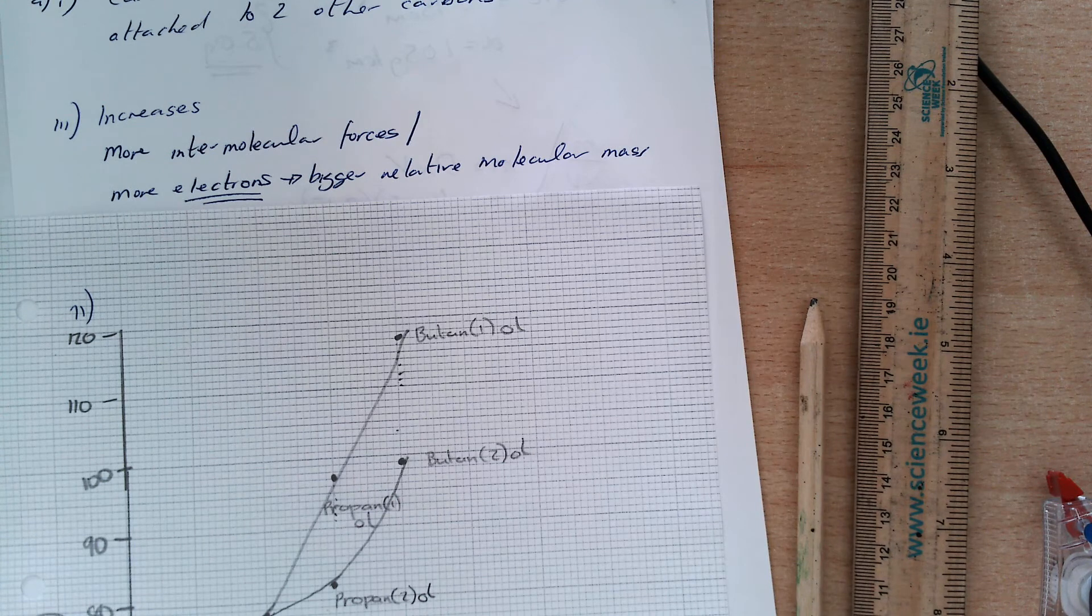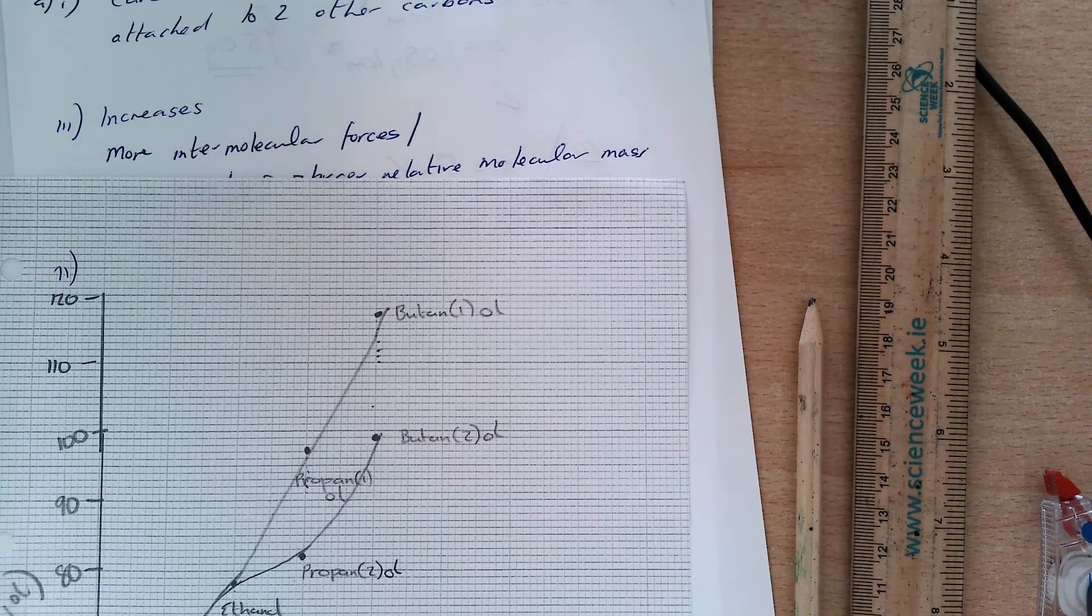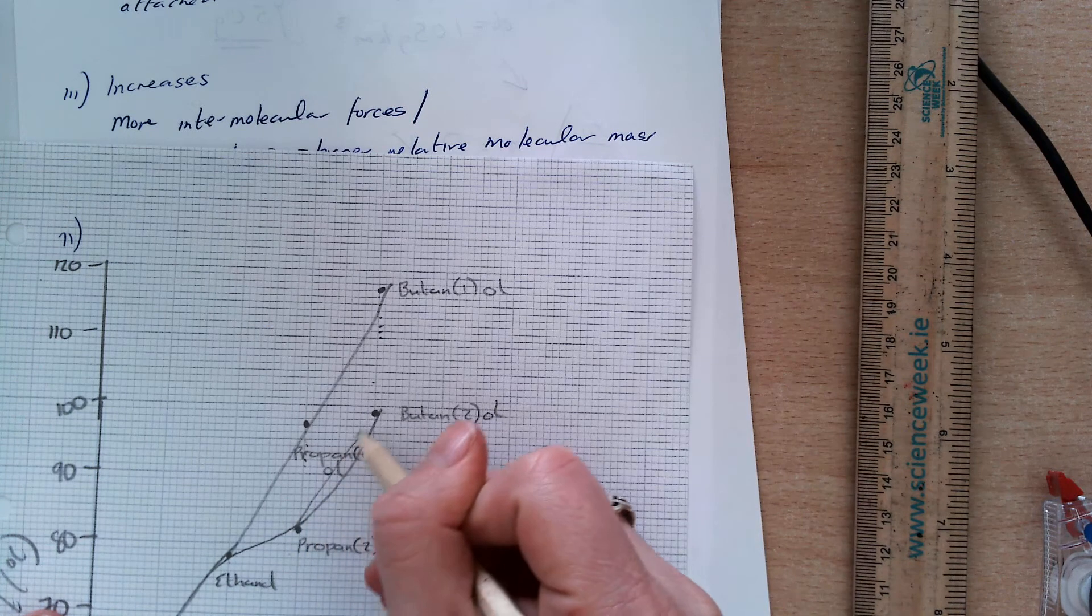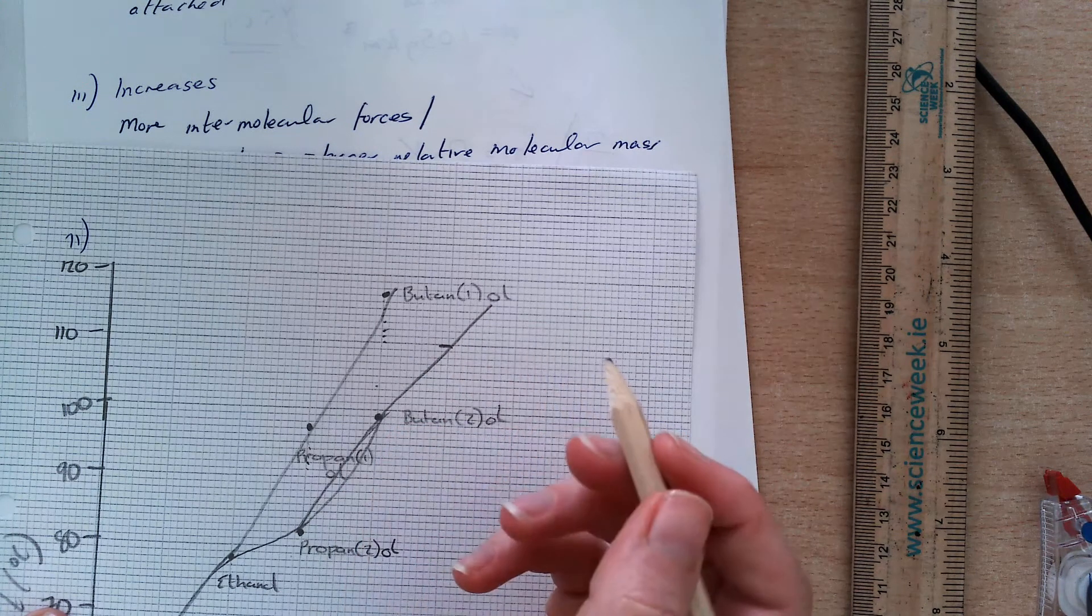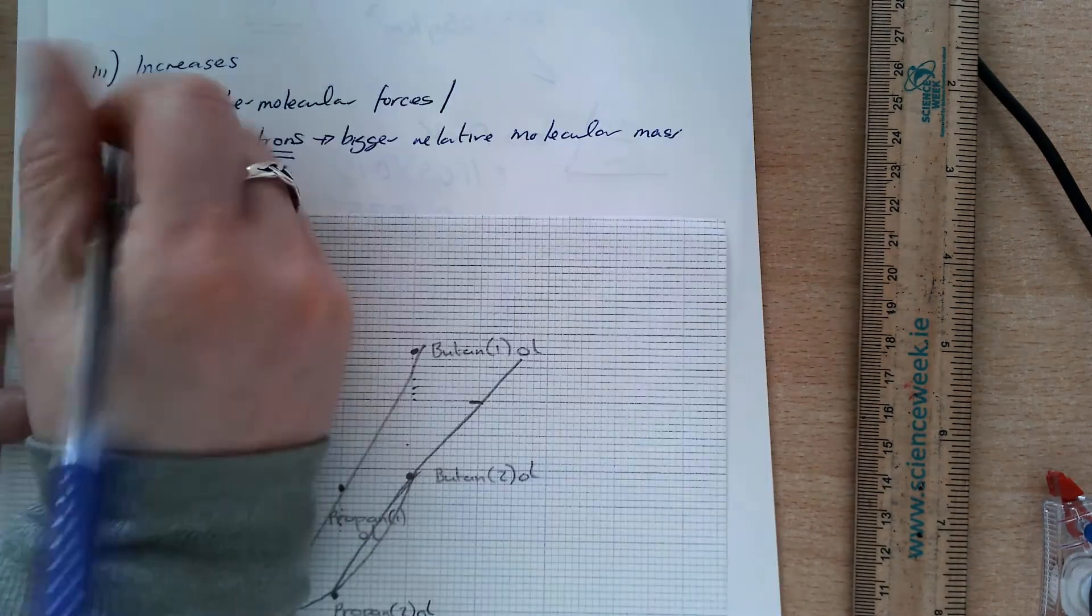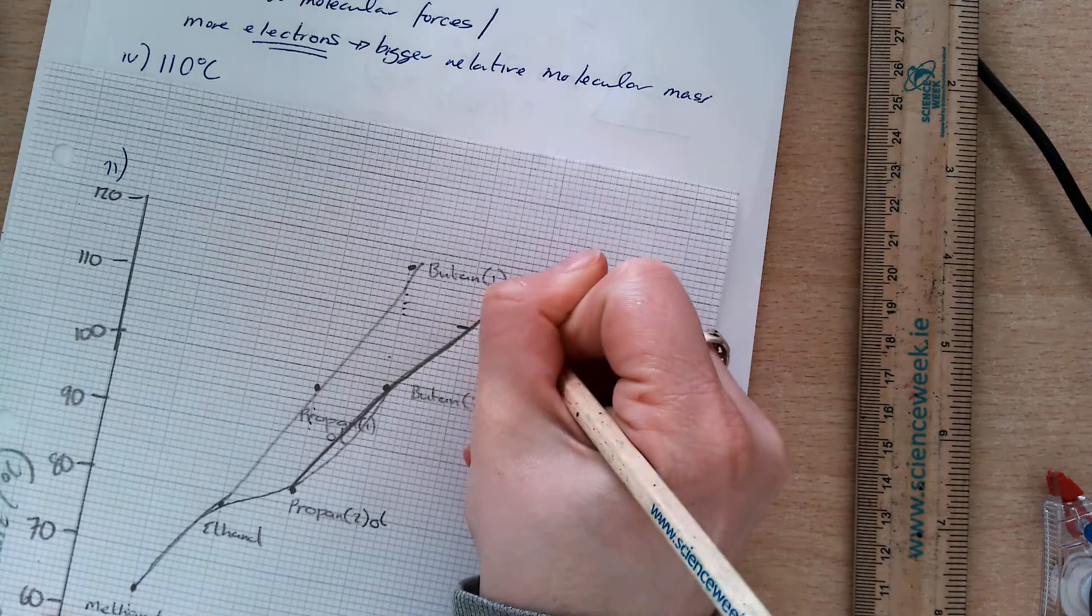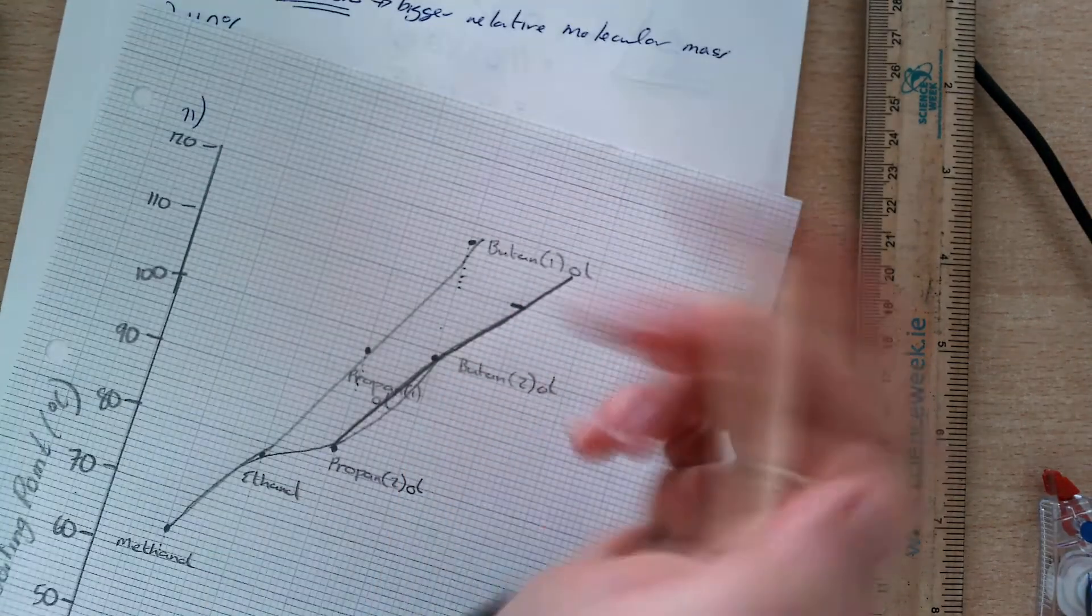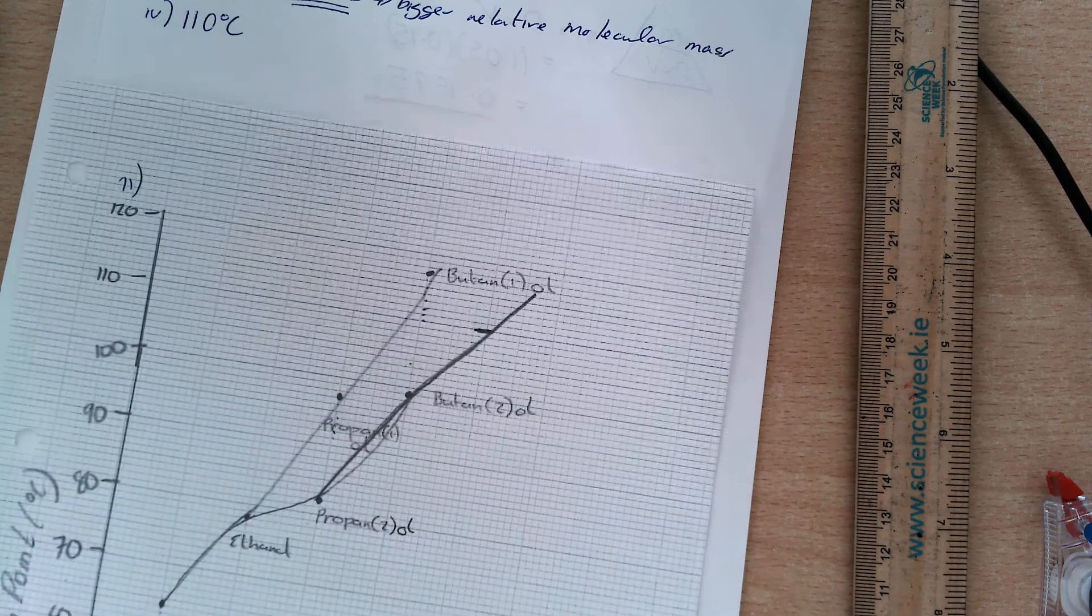Part 4 then. Predict the approximate boiling point of the next alcohol in the same series as propan-2-ol and butan-2-ol. So, if we're going to look at this, this really is the curve that I'm looking at. This is propan-2-ol and this is butan-2-ol. So, if I was to continue for my next one, it would be in and around here. So, by my graph, I'm getting 110 degrees Celsius. The next member of my series would have five carbons. So that's why I'm going up to the five, and this is where it touches my line.